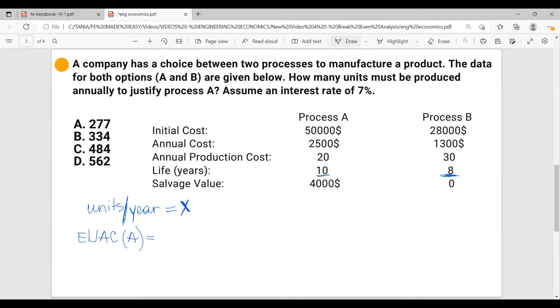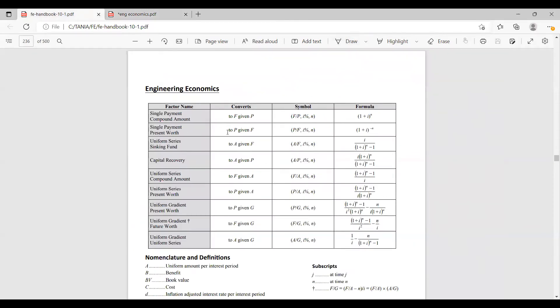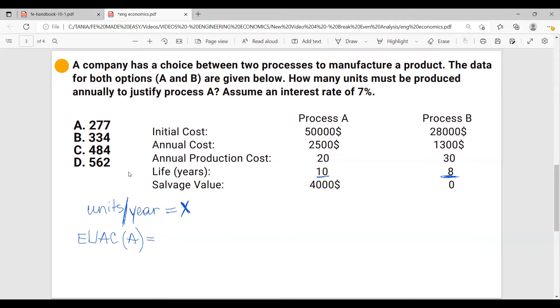So let's start by initial cost, $50,000 of process A is a present amount. So we have to convert it to an annual. Let's go to here. So we are given a two annual given present. So we're going to use this formula over here. And it's a cost, which means it's going to be positive. So we have $50,000 times, and I'm going to use the formula.